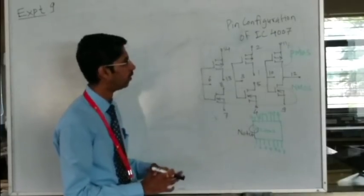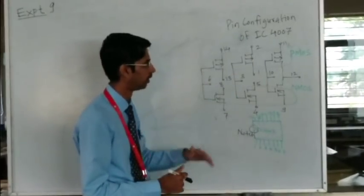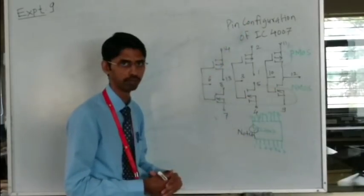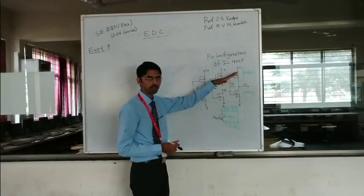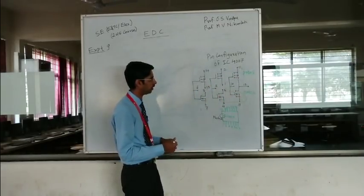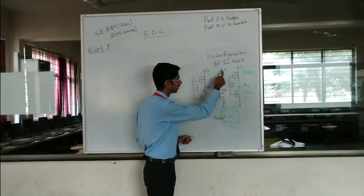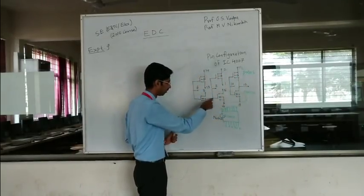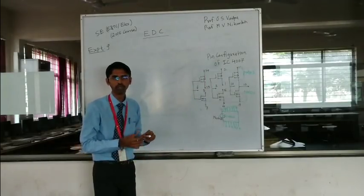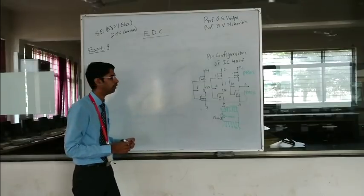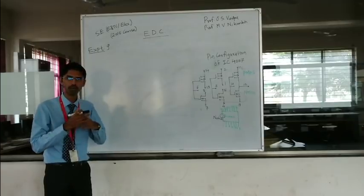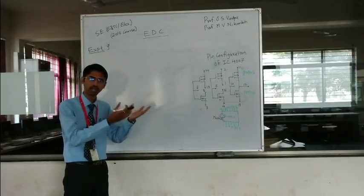It consists of three pairs of P-MOS and N-MOS. The upper ones are P-MOSFETs and the lower ones are N-MOSFETs — there are three such pairs. Our basic construction is MOSFET as a switch, so here we will use a CMOS inverter. CMOS is a complementary metal oxide semiconductor, which is a combination of P-MOS and N-MOS.